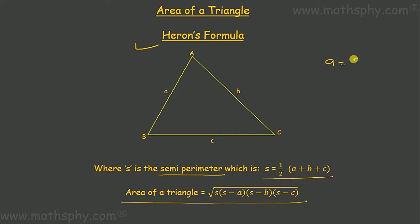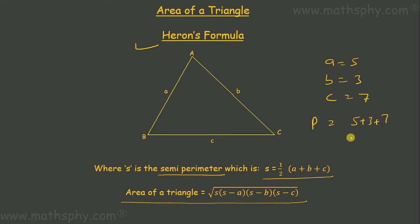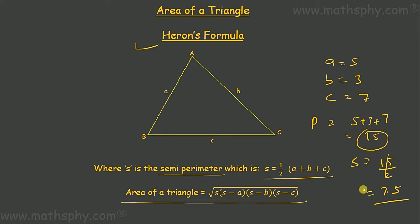For example, suppose A is 5 meters, B is 3 meters, and C is 7 meters. Then the perimeter would be 5 plus 3 plus 7, which equals 15. The semi-perimeter would be half of the perimeter — 15 over 2, which is 7.5.